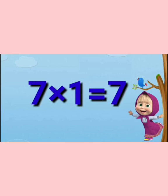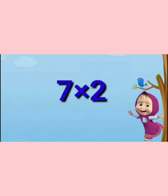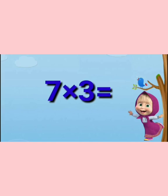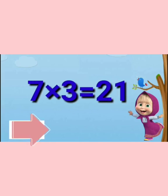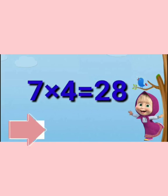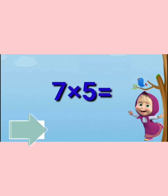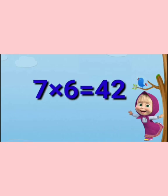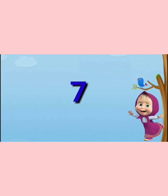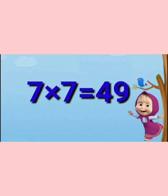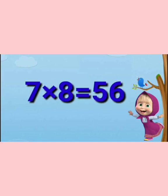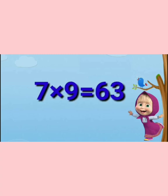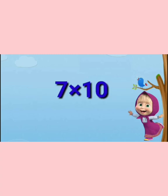Table of 7: 7 ones are 7, 7 twos are 14, 7 threes are 21, 7 fours are 28, 7 fives are 35, 7 sixes are 42, 7 sevens are 49, 7 eights are 56, 7 nines are 63, 7 tens are 70.